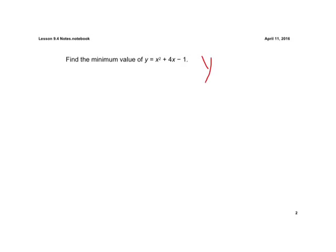Vertex form is the form y equals a, when a is not 0, x minus h squared plus k. And a reminder, the vertex is the point h comma k. And we kind of always remembered we think opposite on h.